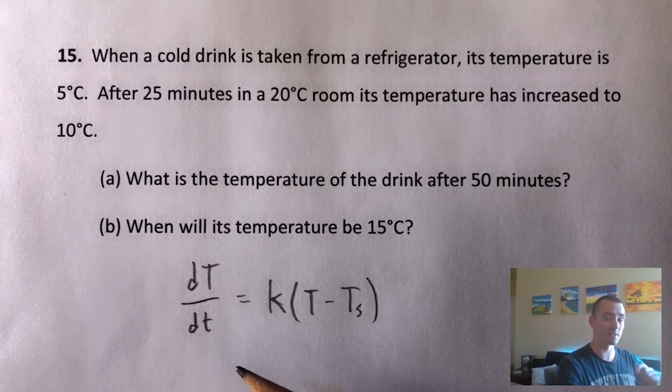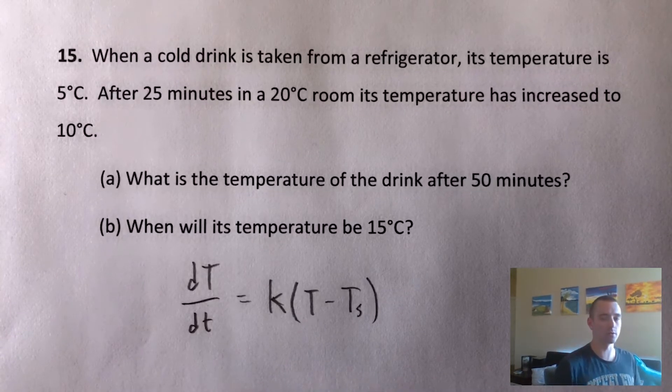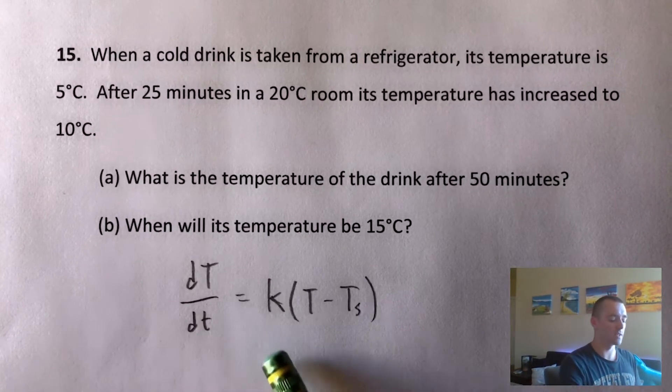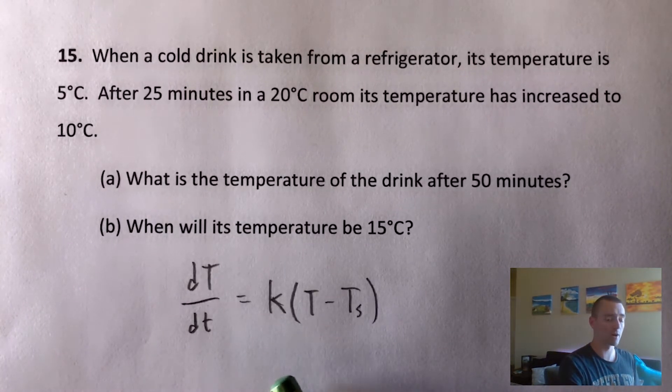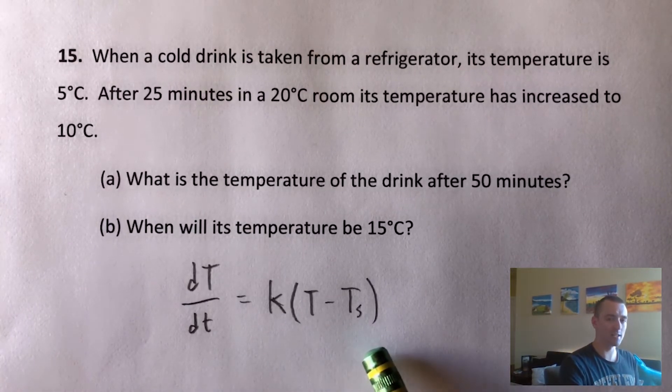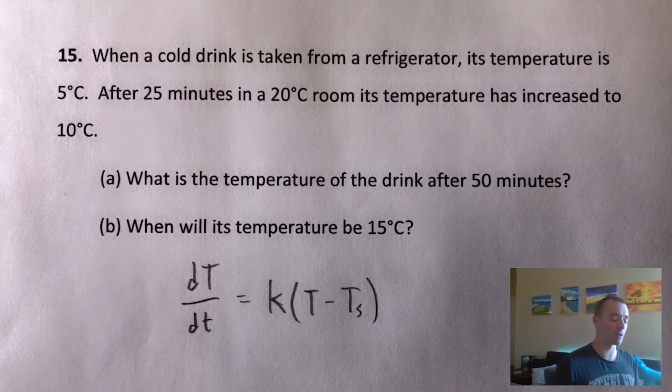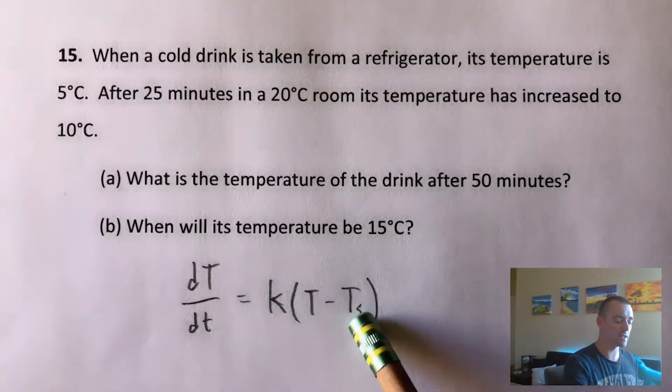This K is going to be some unknown constant we're going to have to figure out. And then this TS is the temperature of the surrounding. So since we're taking this drink and we're putting it in a 20 degree room, we know right off the bat that this TS is going to be 20.